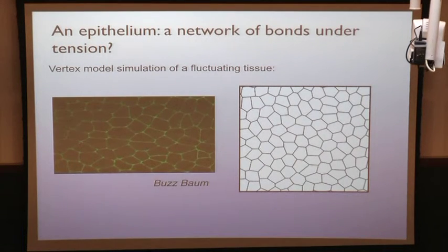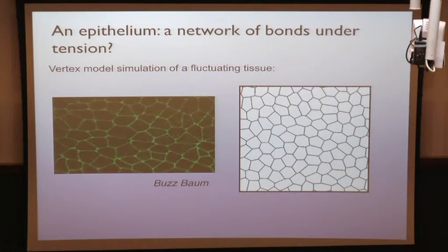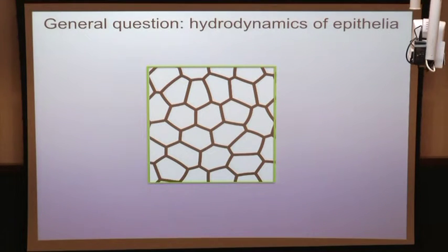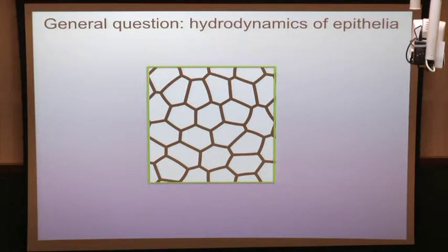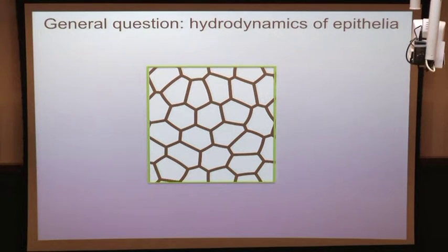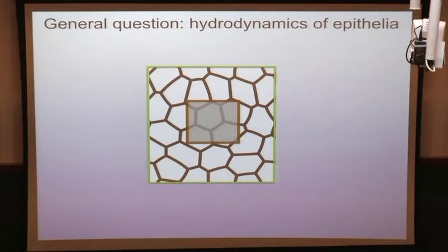Vertex models are useful for questions about detailed cell shapes, but today I want to ask a different question. Instead of describing every cell, I want a theory describing the tissue on large scales — much larger than a cell. The goal is hydrodynamics of epithelia: describing the system on large spatial scales and slow time scales, a continuum coarse-grained theory that retains the important information from the cell scale.